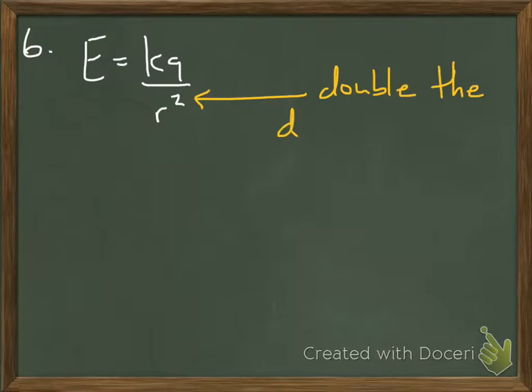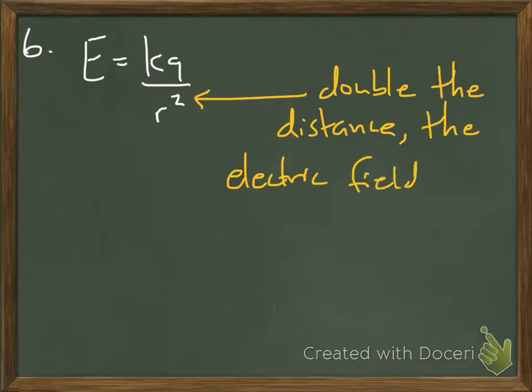If you double the denominator, it's squared, so it's really going to turn into a 4, right? So it's going to be one-fourth times your original value. So if you double the distance because of the squared, the electric field is going to decrease by a factor of 4.